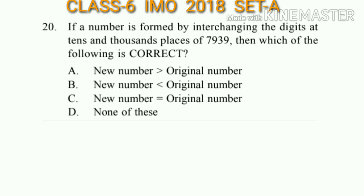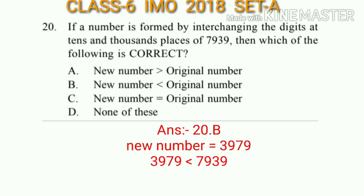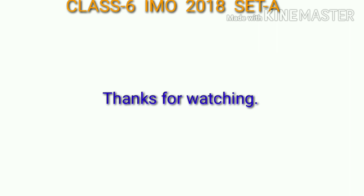Question number 20: If a number is formed by interchanging the digits at the tens and thousands place of 7939, which of the following is correct? The tens digit is 3 and the thousands digit is 7. Interchanging gives the new number 3979. Since 3979 is less than 7939, the answer will be option B: the new number is less than the original number. This is part one of the 2018 IMO Set A for Class 6. Thanks for watching.